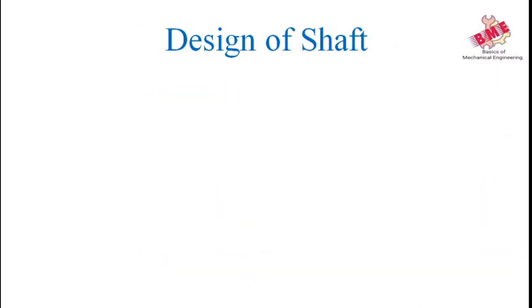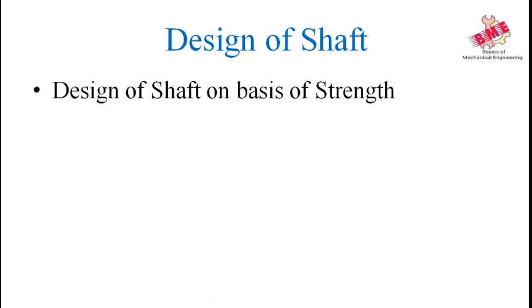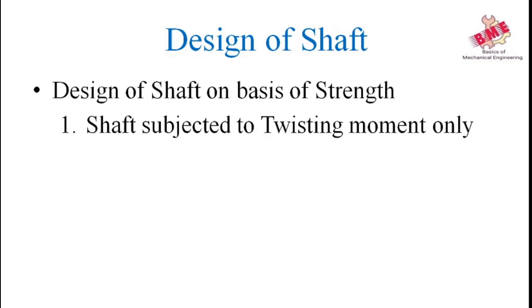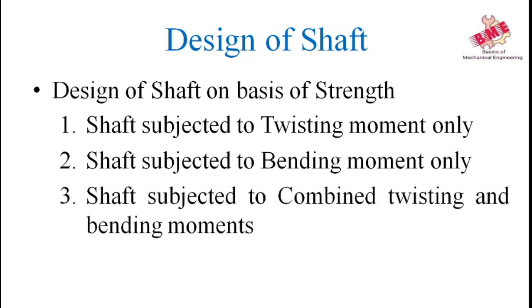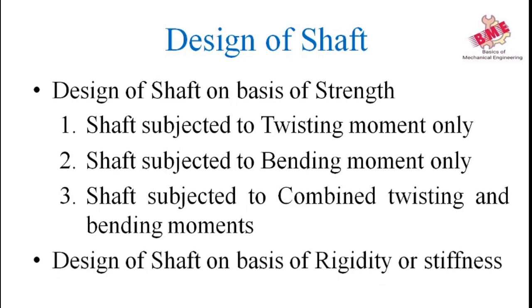Design of Shaft is done mainly on two bases. First is Design of Shaft on the Basis of Strength, which is divided into three different parts because a shaft is subjected to twisting as well as bending moment: shaft subjected to twisting moment only, shaft subjected to bending moment only, and shaft subjected to combined twisting and bending moments. Design of Shaft is also done on the Basis of Rigidity or Stiffness.